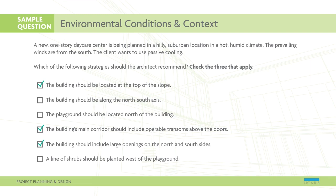A north-south axis would actually limit the opportunities for cross ventilation and expose the building to the hot afternoon sun. Placing the playground north of the building would provide limited shading but would block cooling breezes. Planting shrubs west of the playground may provide visual interest but would not be effective in blocking the hot afternoon sun. This is an AE-level item requiring analysis of existing site conditions and passive cooling strategies.